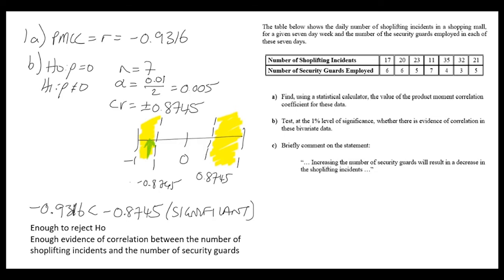Part C asks us to comment on the statement: increasing the number of security guards will result in a decrease in shoplifting incidents. We did have negative correlation, but correlation does not always mean causation. There may have been a third factor actually making the shoplifting incidents reduce, so we can't say for sure this is what's going to happen.